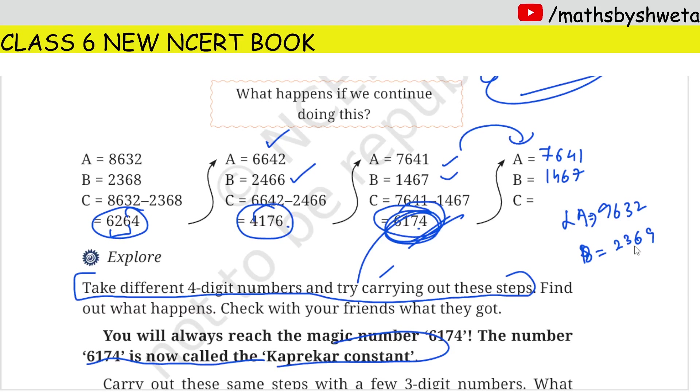Minus. 9632 minus 2369, so 7263. Now I will make the largest number again, 7632. I will make the smallest number again, 2367.